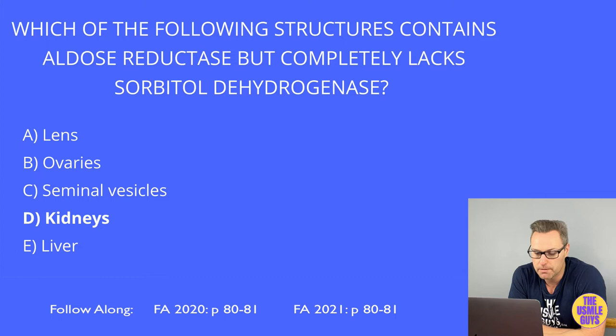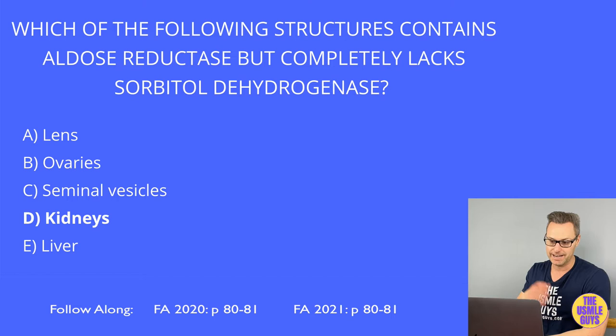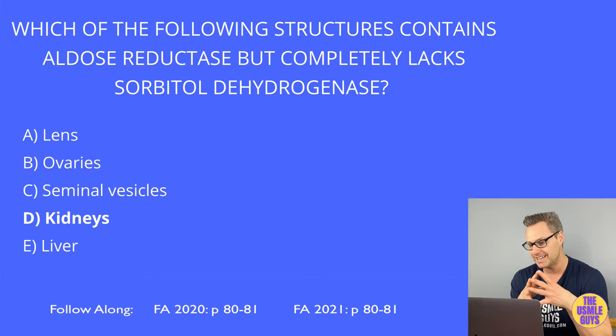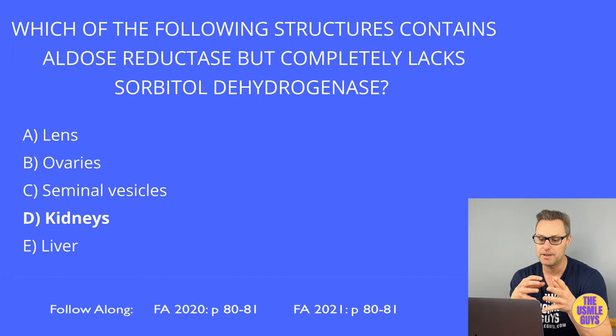A more worrisome fructose-related condition is hereditary fructose intolerance. That is also inherited in an AR manner, but the deficiency is different — it's caused by a deficiency of the aldolase B enzyme. As a result, we will see an accumulation of fructose-1-phosphate, which lowers the availability of phosphate and subsequently inhibits gluconeogenesis and glycogenolysis.